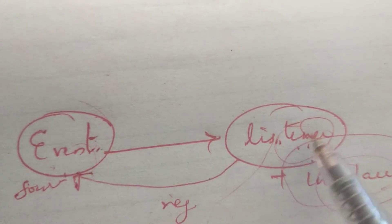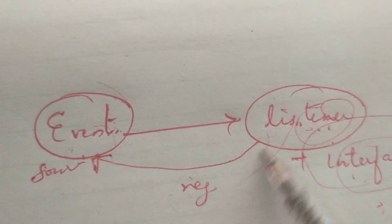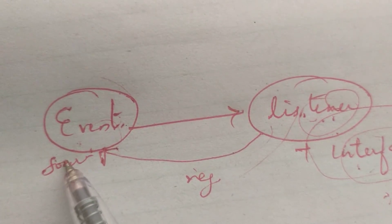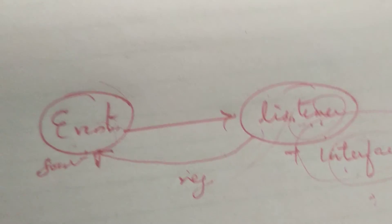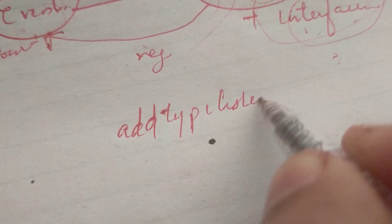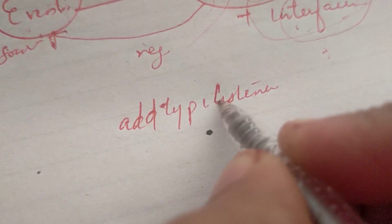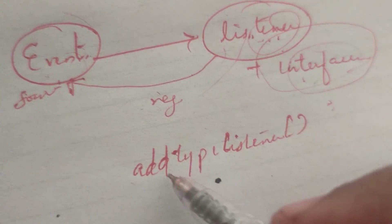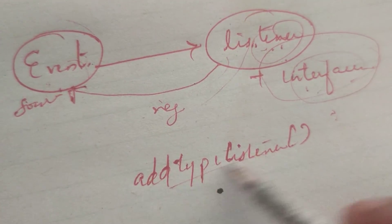If you click on the event, we want to register it with sources. The listener will register the listener. We use addTypeListener to register. Two listeners will be added using addTypeListener.